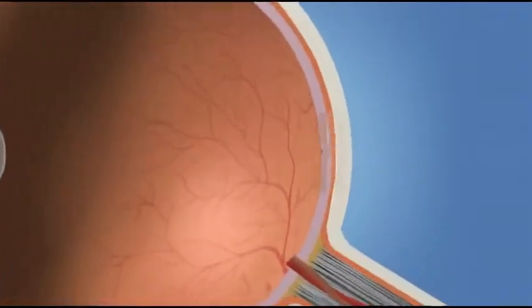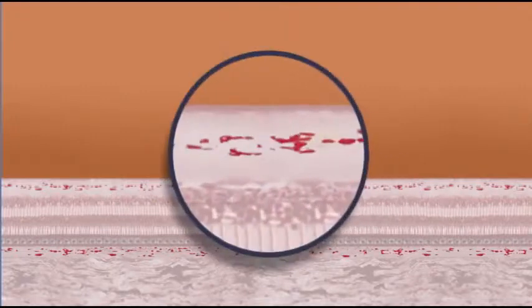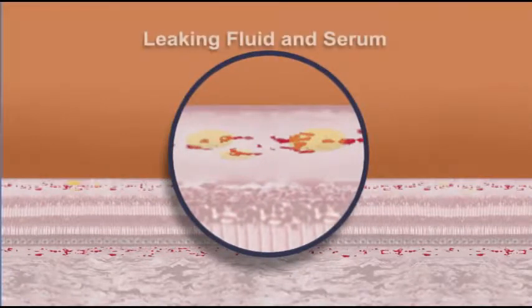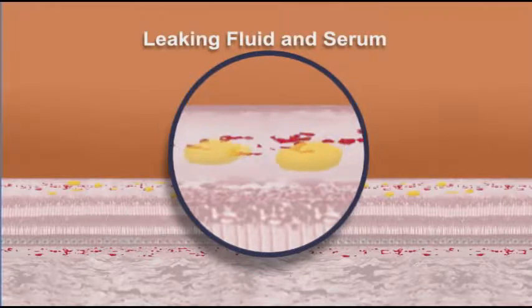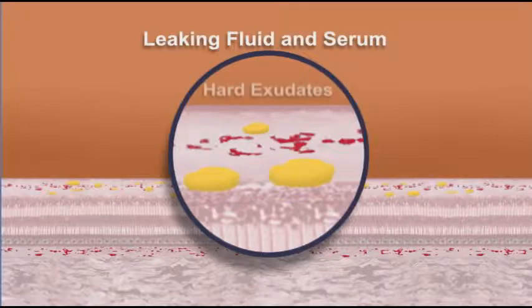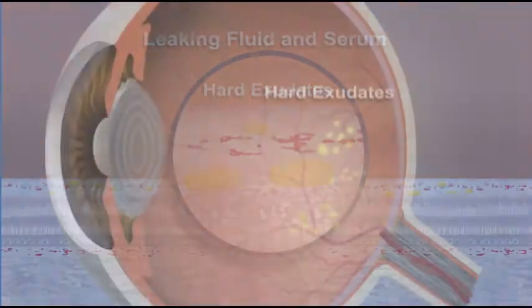With non-proliferative diabetic retinopathy, or NPDR, damaged blood vessels in the retina begin to leak fluids, including small amounts of blood, into the retina. Sometimes deposits of fats may leak inside the retina. These deposits are called hard exudates.